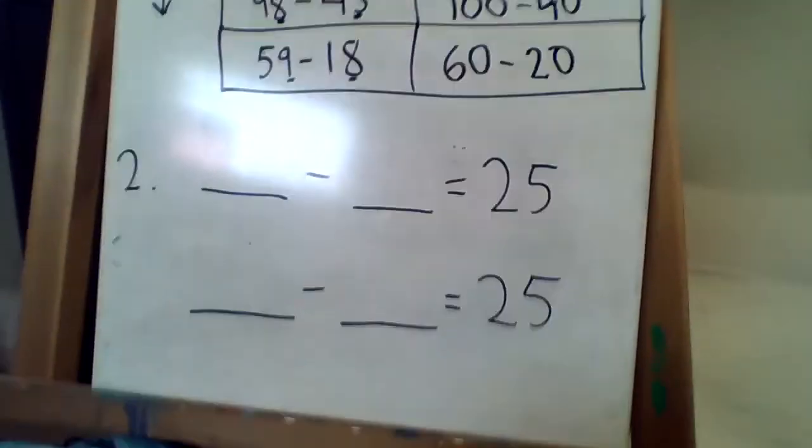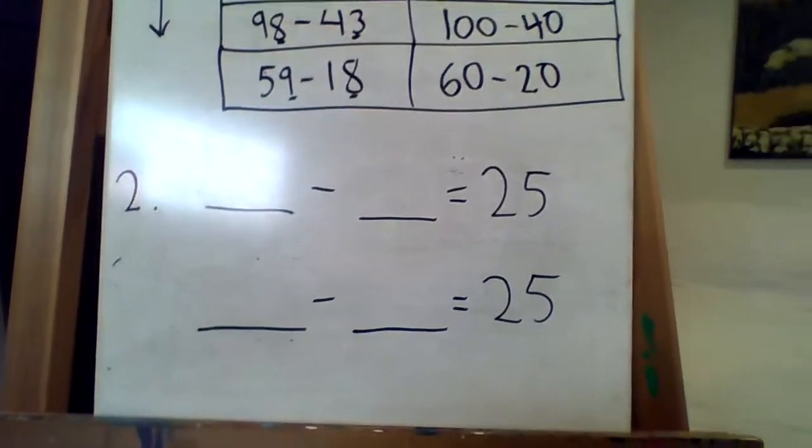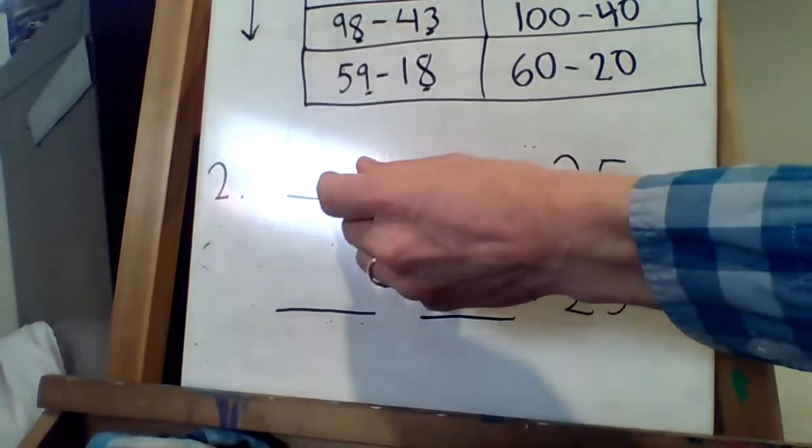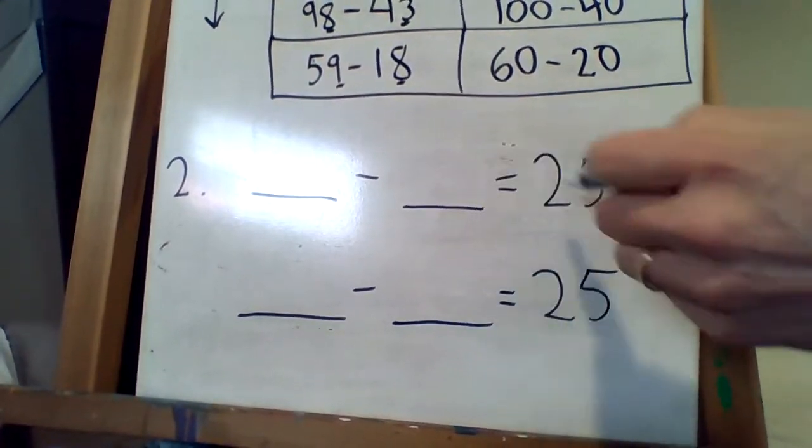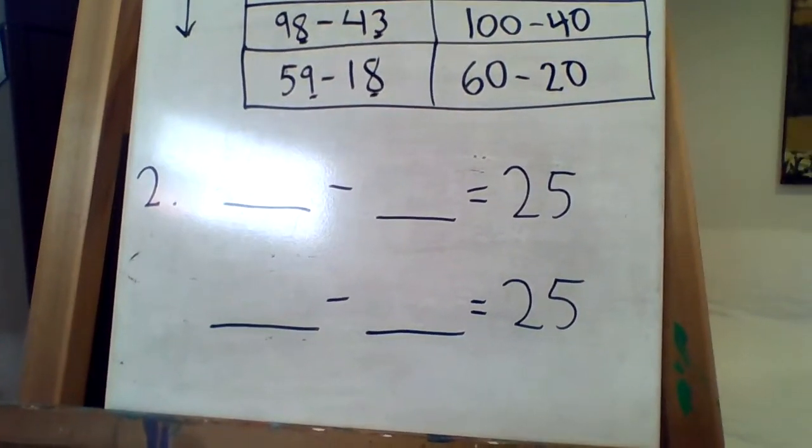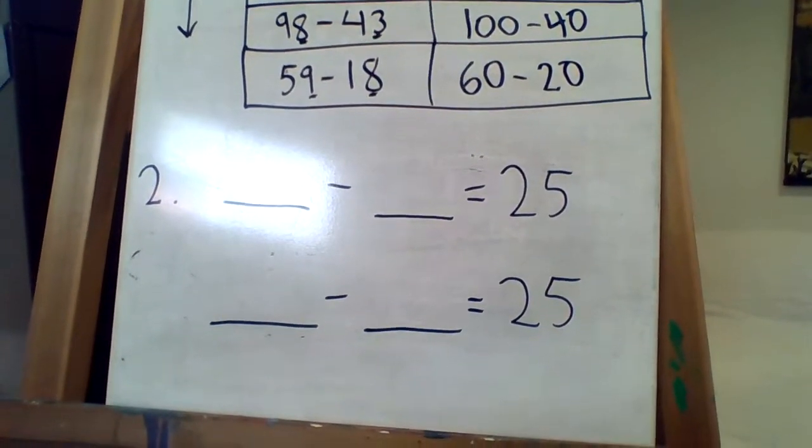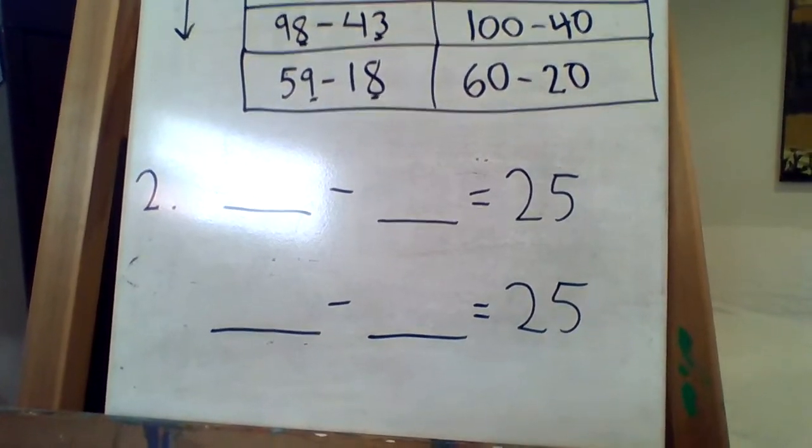So there are an incredible number of answers for this but I just wanted to show you that's what it meant. Something subtract something equals 25. Because we're looking for the difference, the estimated difference of two numbers.